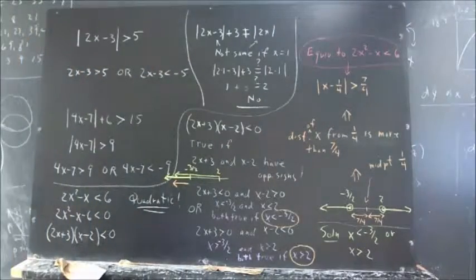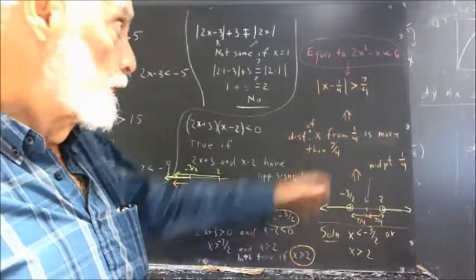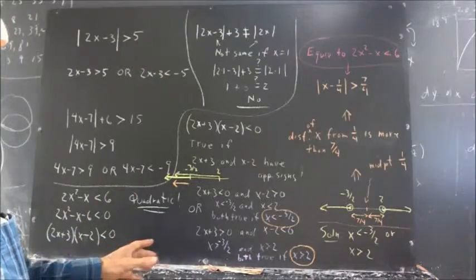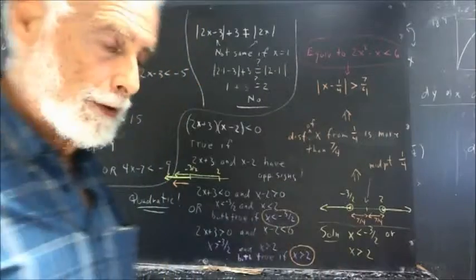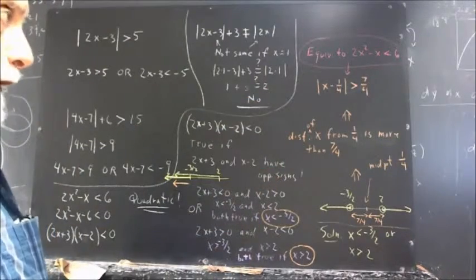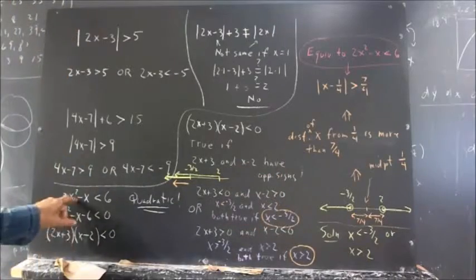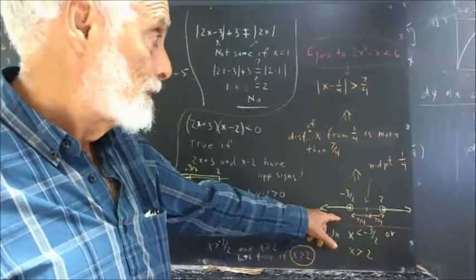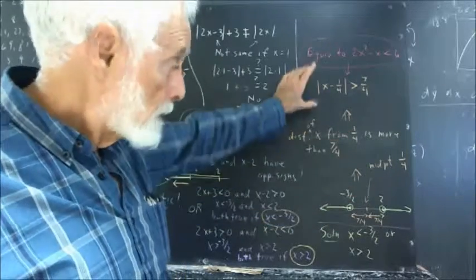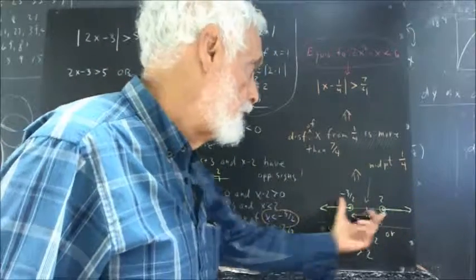That's quite interesting: quadratic inequalities and absolute value inequalities are connected in a very intertwined manner. Make sure you understand the solution and graphing of this quadratic inequality, and how the equivalent absolute value inequality gives the same graph. Understanding how an absolute value inequality relates to the center of an interval and the region outside or inside it is something you really want to grasp.